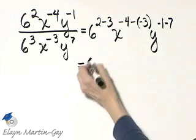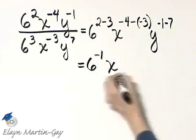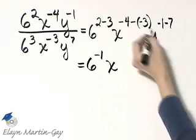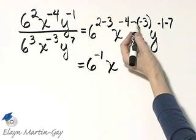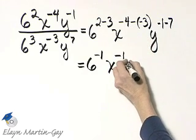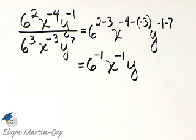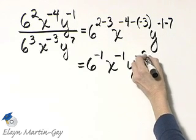Now let's write down what we have. 6 to the power of 2 minus 3 is negative 1. x raised to the power of negative 4 minus negative 3. That's negative 4 plus 3, and negative 4 plus 3 is negative 1. And then y raised to the power of negative 1 minus 7. That's negative 8.